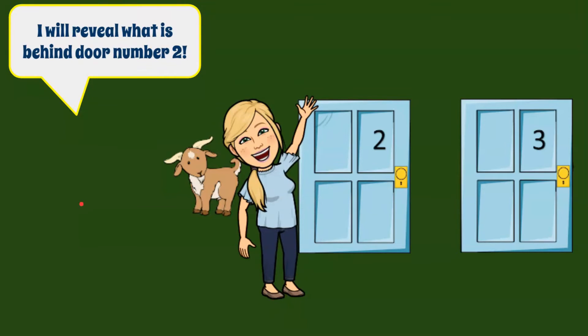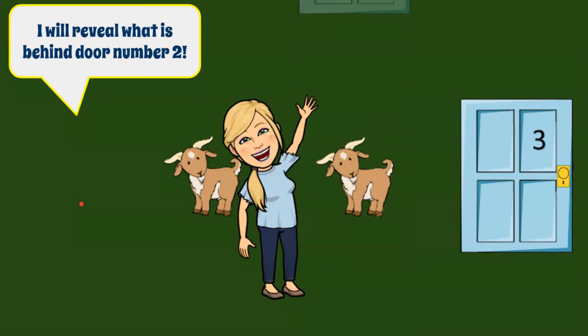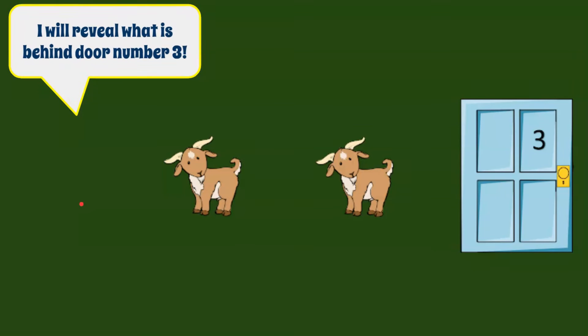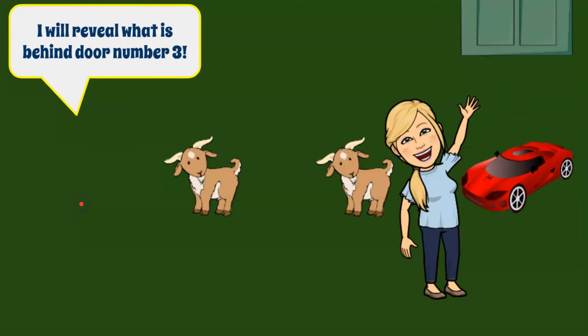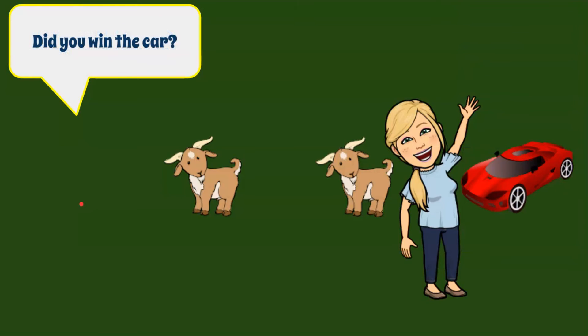I will now reveal to you what is behind door number two. Door number two has a goat. Behind door number three, we have the car. So if you picked door number three, you won a car. I wonder, did you win the car?